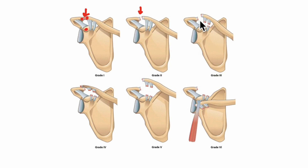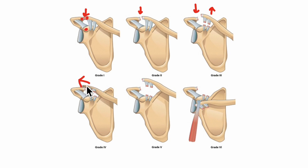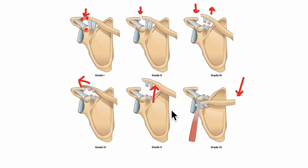In grade three, both the acromioclavicular and coracoclavicular ligaments are ruptured and there is elevation of the clavicle; treatment is conservative or surgical. In grade four, there is acromioclavicular and coracoclavicular ligament rupture and the clavicle is posteriorly displaced, requiring surgery. In grade five, there is again acromioclavicular and coracoclavicular ligament rupture with severe elevation of the clavicle. In grade six, there is acromioclavicular and coracoclavicular ligament rupture with inferior displacement of the clavicle. Both grade five and six require surgery.